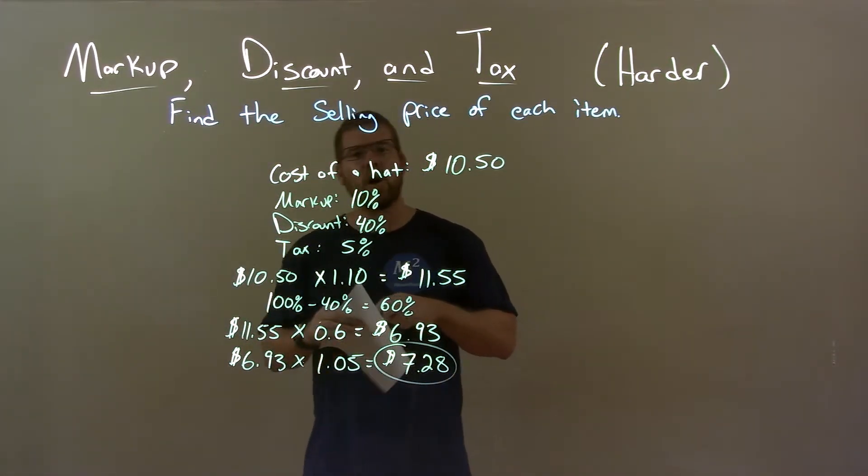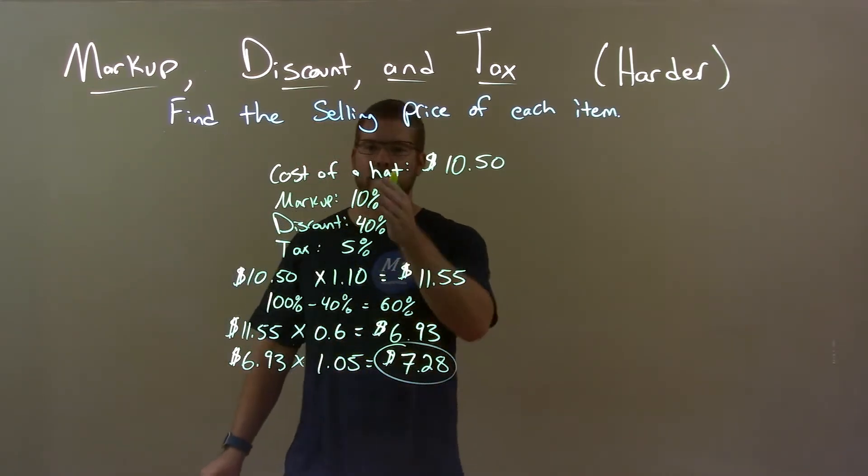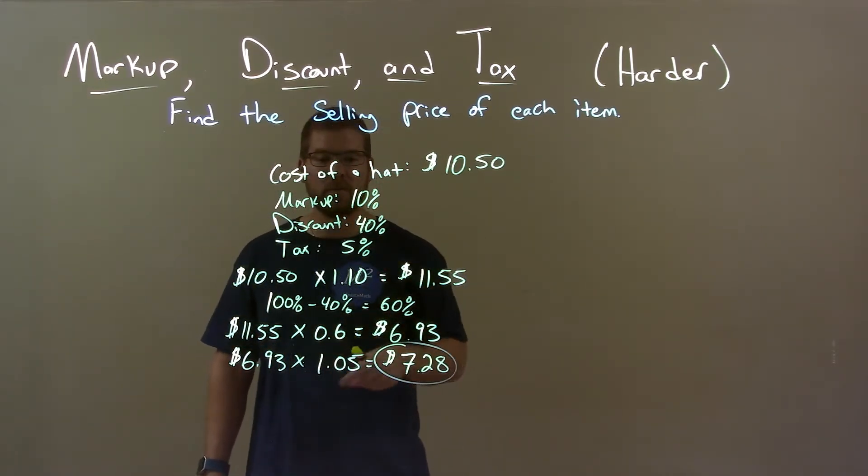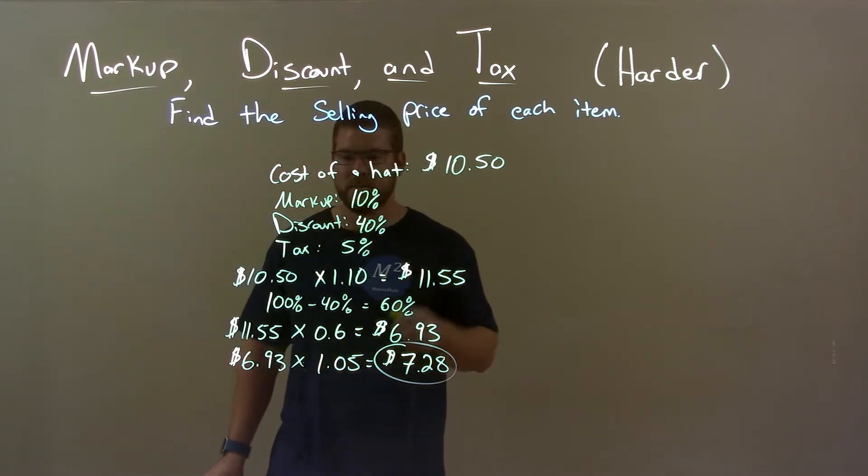So quick recap. We're given the cost of a hat is $10.50, markup is 10%, and discount is 40%, and finally tax of 5%. Now we have to find the final sale price of this hat.